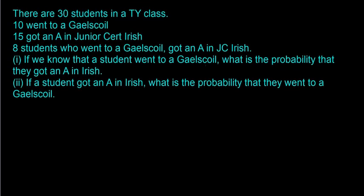There are 30 students in a TY class. 10 went to a Gaelscoil, 15 got an A in Junior Cert Irish, and 8 students who went to a Gaelscoil got an A in Junior Cert Irish. So the first thing I'm going to do is draw a quick Venn diagram, just to get our heads around the problem.